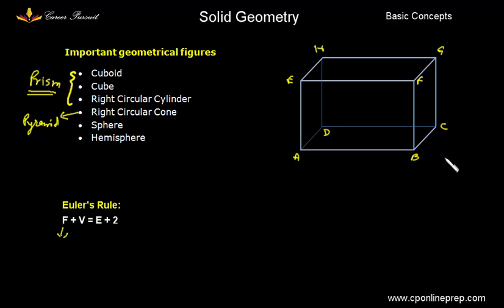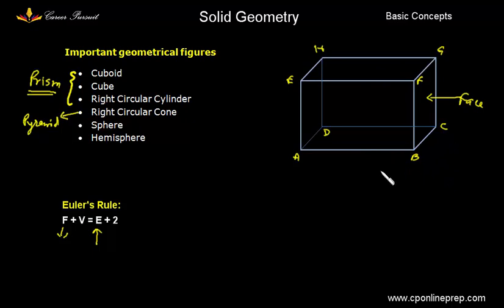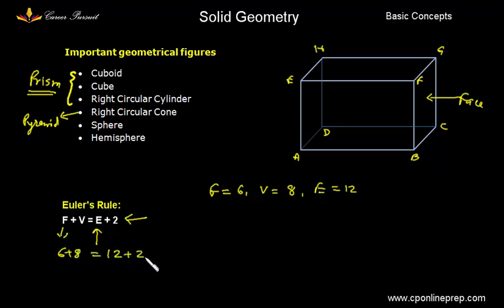F is face — for example in this cuboid, B, C, G, F is a face, denoted by F. V is the vertex, so A, B, C, D, E, F, G, H are vertices. E is the edge — for example AB is an edge, BF is an edge, and so forth. In a cuboid we have 6 faces, 8 vertices and 12 edges. Euler's rule states that F plus V equals E plus 2, i.e., 6 plus 8 equals 12 plus 2, which is 14 on both sides. This is a simple rule which we should remember.